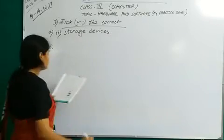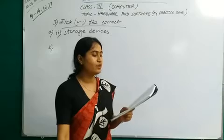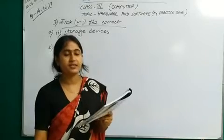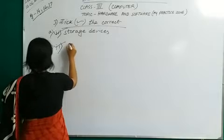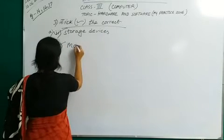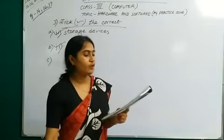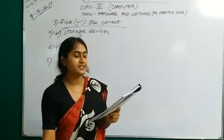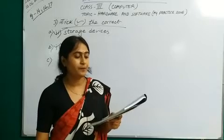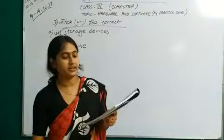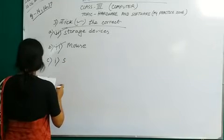Number B: Which of the following is an input device? Options are speaker, mouse, printer, and CD. Mouse is an input device — tick option 2, mouse. Number C: An operating system is an example of — system software, application software, both of these, or none of these. The answer is option 1 — system software. Operating system is an example of system software.